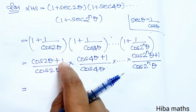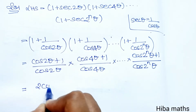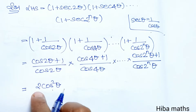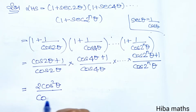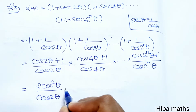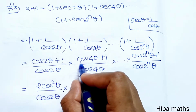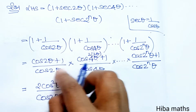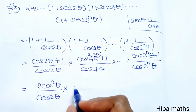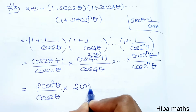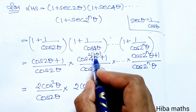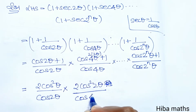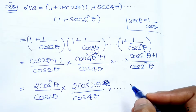Now applying the identity: cos2θ + 1 = 2cos²θ. So the numerator of the first term becomes 2cos²θ divided by cos2θ. Similarly, cos4θ + 1 = 2cos²2θ divided by cos4θ.